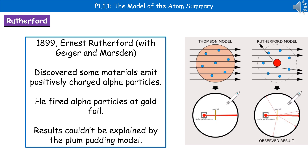Once he'd found these alpha particles, Rutherford decided to fire them at a very thin sheet of gold foil. What he found was that, contrary to what they were expecting from the plum pudding model — that the alpha particles would just go straight through — in fact those particles reflected at a range of different angles, as well as some being able to pass through. Those results couldn't be explained by the plum pudding model, which suggested that Thomson's model was therefore wrong.